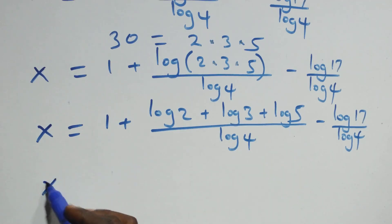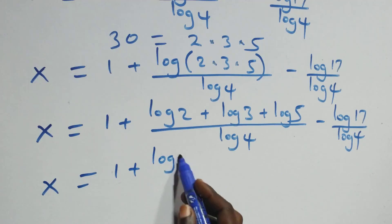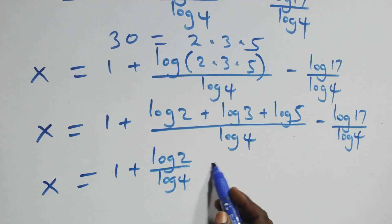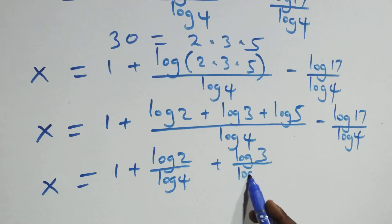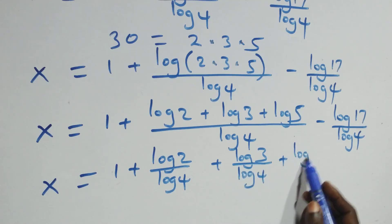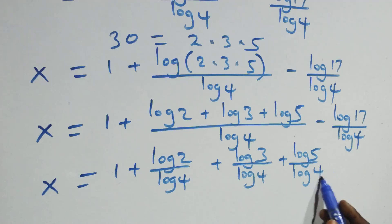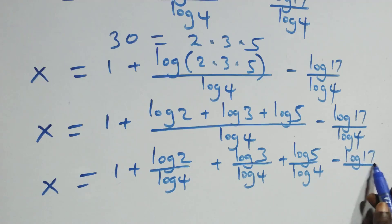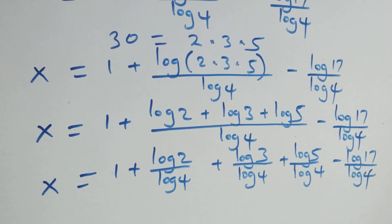Separating into three fractions: x equals 1 plus log 2 over log 4, plus log 3 over log 4, plus log 5 over log 4, minus log 17 over log 4.